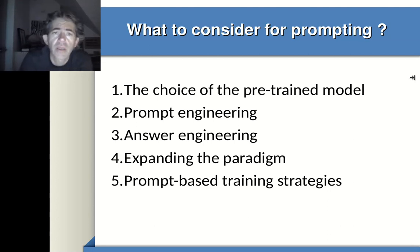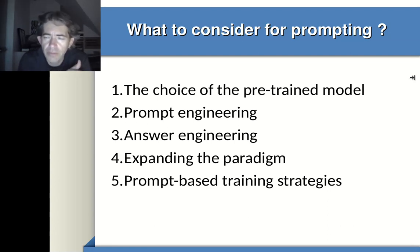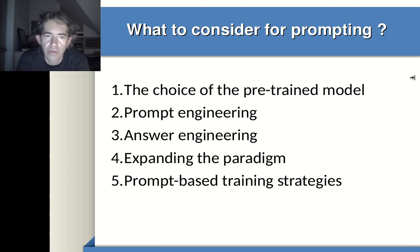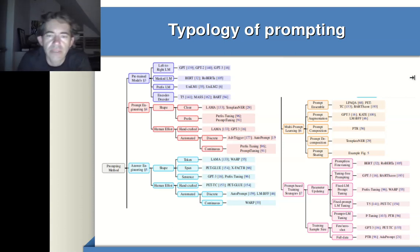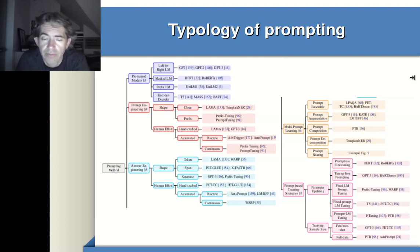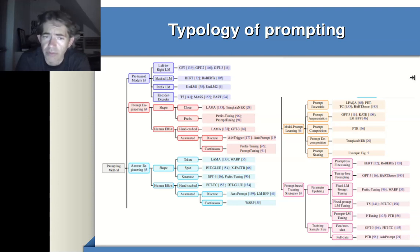What should we consider for prompting? There are five things: the choice of pre-trained model, prompt engineering, answer engineering, expanding the paradigm, and prompt-based training strategies. This typology of prompting is vast — it's not just taking the input, coming up with a clever way to describe what you want the model to do, and hoping for the best. There is much more to it.